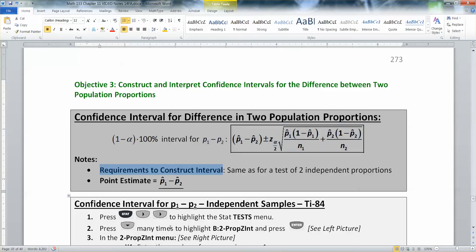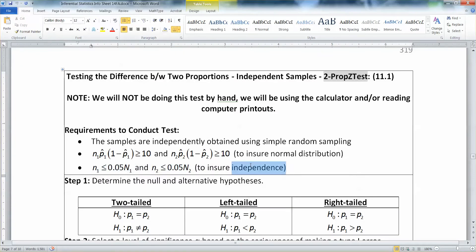Now the requirements to construct this interval are the same ones that we had for the hypothesis test, the 2-prop-z test. So we have to have independent samples that are drawn with simple random sampling, as usual. Then we need n times p times 1 minus p to be greater than 10 in order to ensure that our distributions are normal for both group 1 and group 2. So you have to check it twice if you are required to verify the requirements.